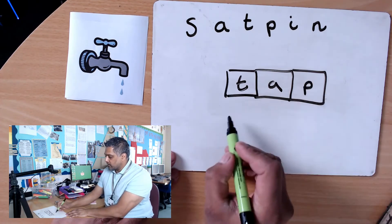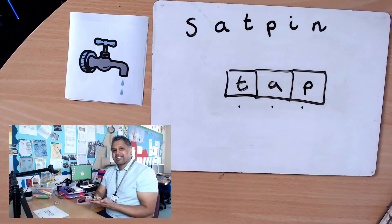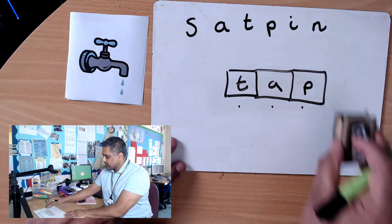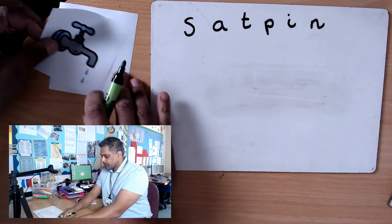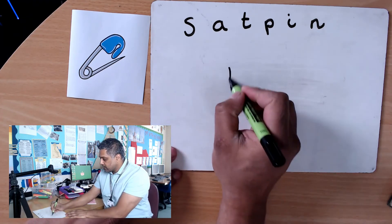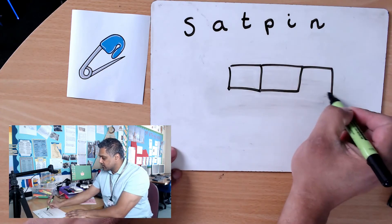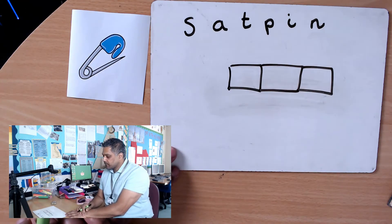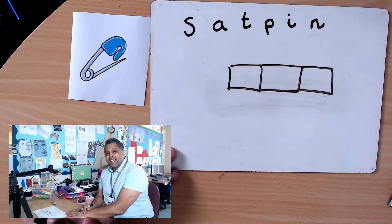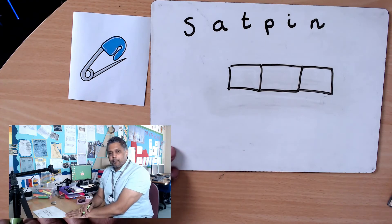We'll do one more. What do I see there? Again, these are CVC words, so a consonant, a vowel, and a consonant. Three sounds. I see a pin. Pin, the word pin. How am I going to segment pin? Definitely P at the beginning, got I, and then N at the end. Pin.